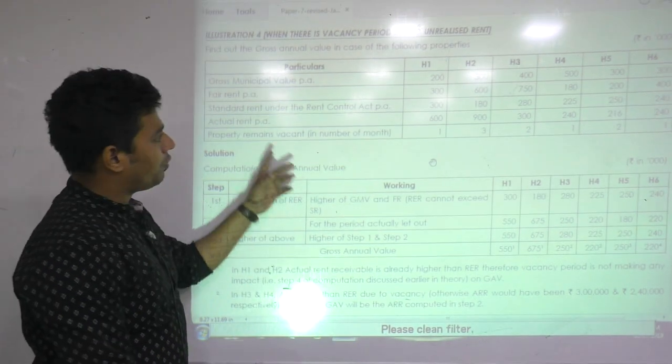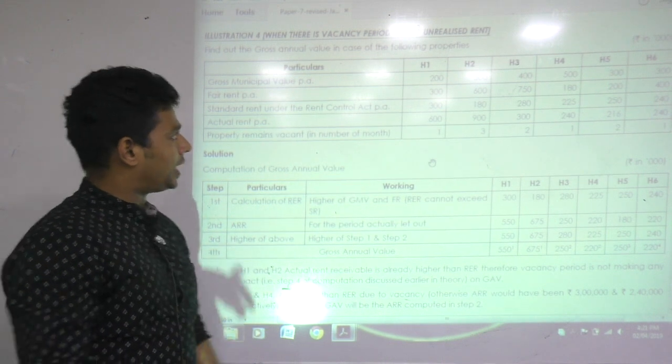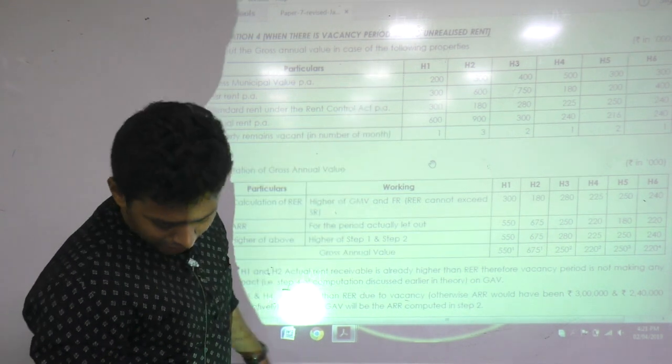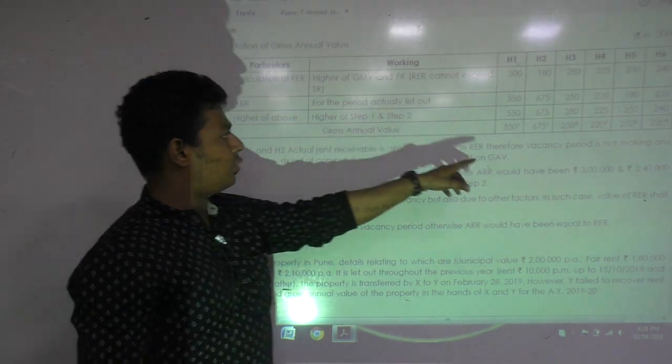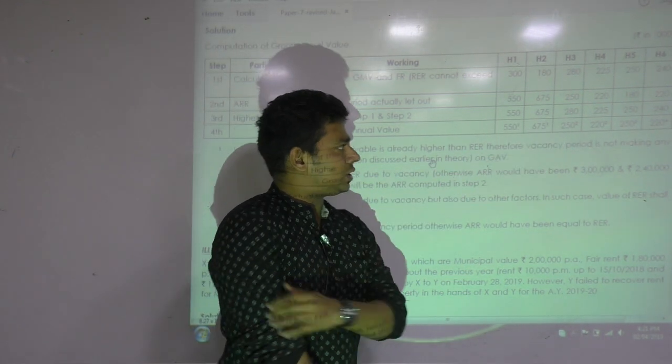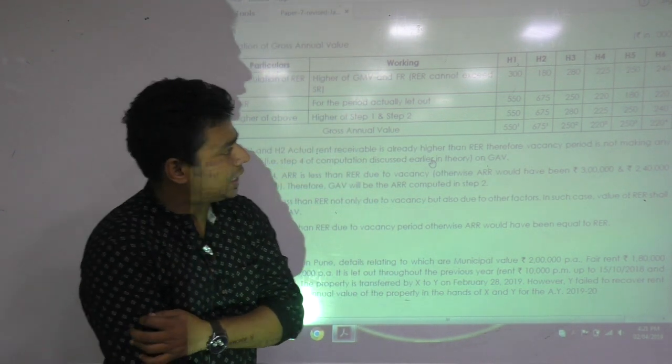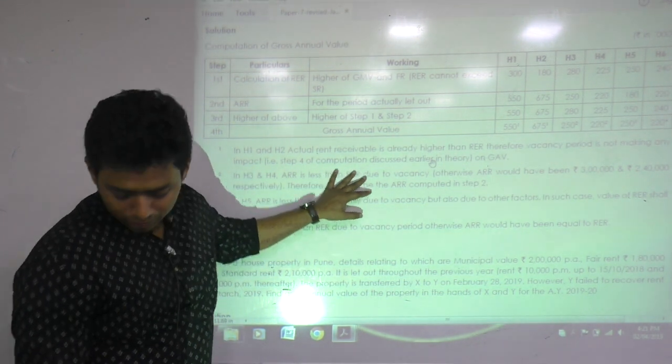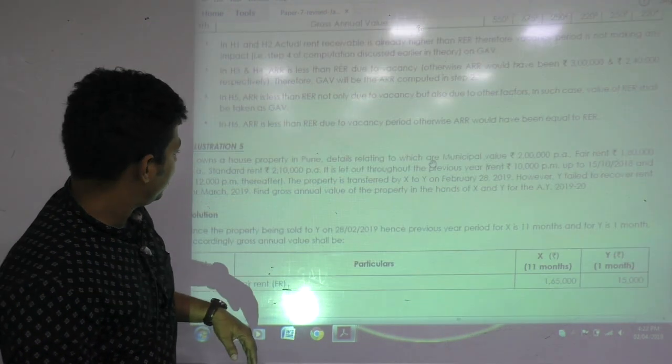Alright, listen. Just now we have solved an illustration for a case where there was vacancy but no unrealized rent. These are the six houses. Final GAB, can you check? H1: 550, H2: 675, H3: 250, H4: 220, H5: 250, and H6: 220. They have written everything in detail. Please read these notes, they are very important.